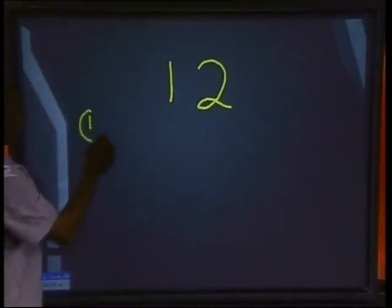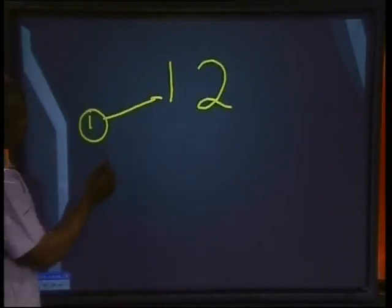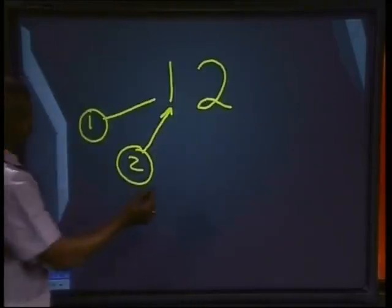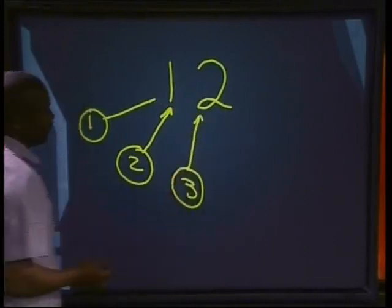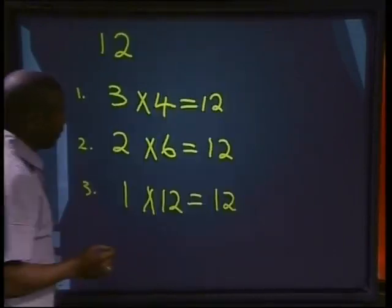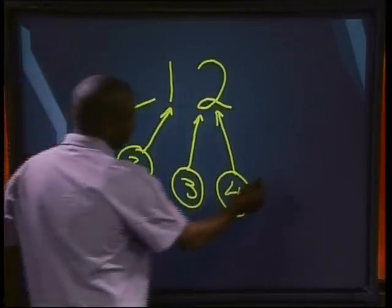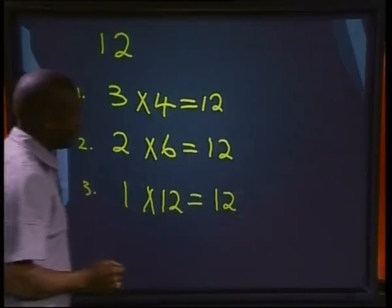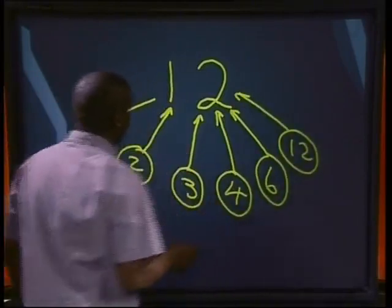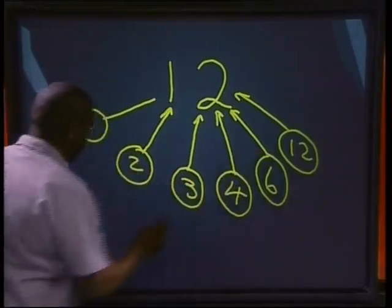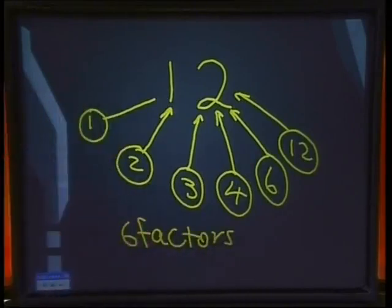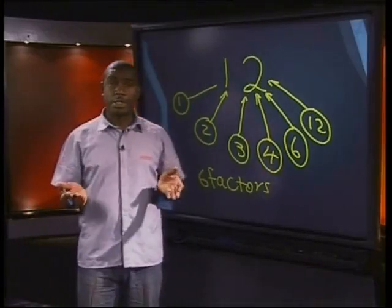1, 2, 3, 4, and 6 can all divide into 12. So how many factors do we have? 1, 2, 3, 4, 5, 6 factors. We saw that 12 has 6 factors. That means 12 is not a prime number.